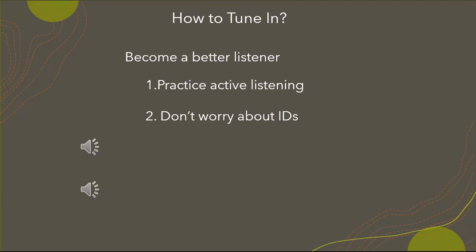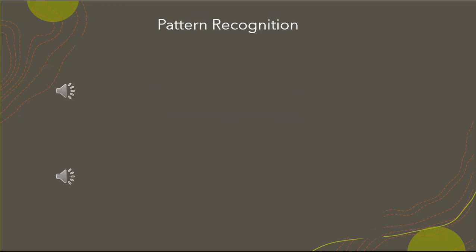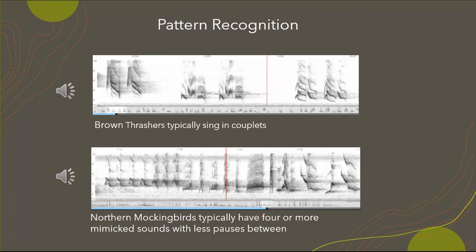Now we're going to move on to pattern recognition. When you're actively listening, it's great practice to find the pattern in what you're listening to — and also to listen to the spaces in a song, because the pauses and tone differences can give you more of an ID clue. The first example here is a brown thrasher. Brown thrashers typically sing in couplets. People often ask how to tell apart a brown thrasher, northern mockingbird, and catbird — all three are mimics — and listening to the pattern helps you determine between these three species.